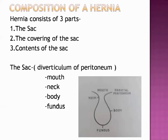Hernia consists of three parts: the sac, the covering of the sac, and the contents of the sac. The hernia sac is a diverticulum of peritoneum, meaning the sac is made up of peritoneum, and is divided into the mouth, neck, body, and fundus. The mouth is the opening of the hernia. The neck is the narrowest portion, the body varies in size, and the last part is the fundus.